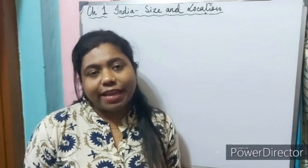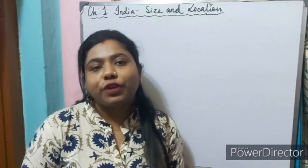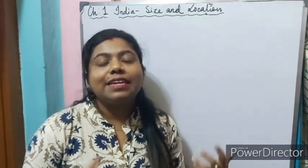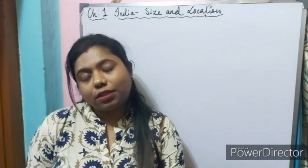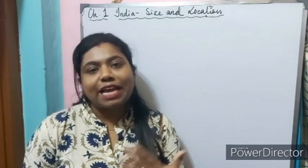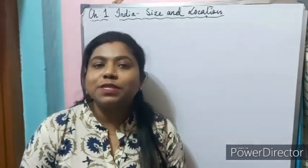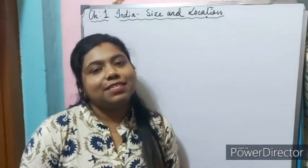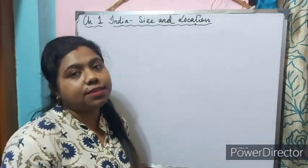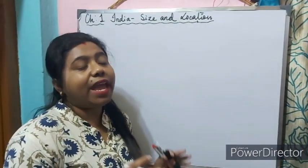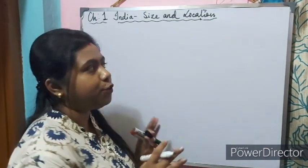In this second video, which is a continuation of the first, let us understand how 82 degrees 30 minutes East has been selected as the standard meridian and why it has been selected as the standard meridian of our country.